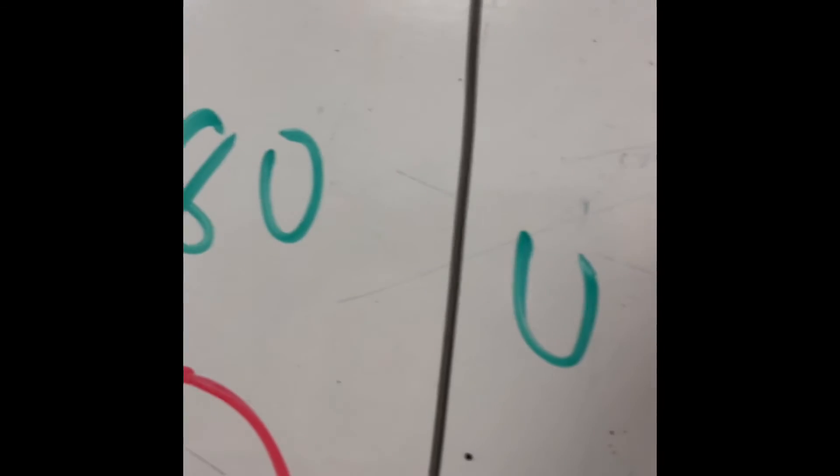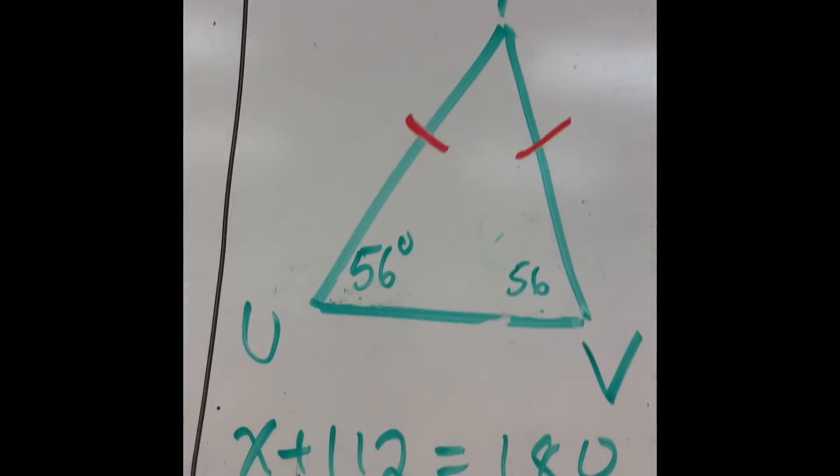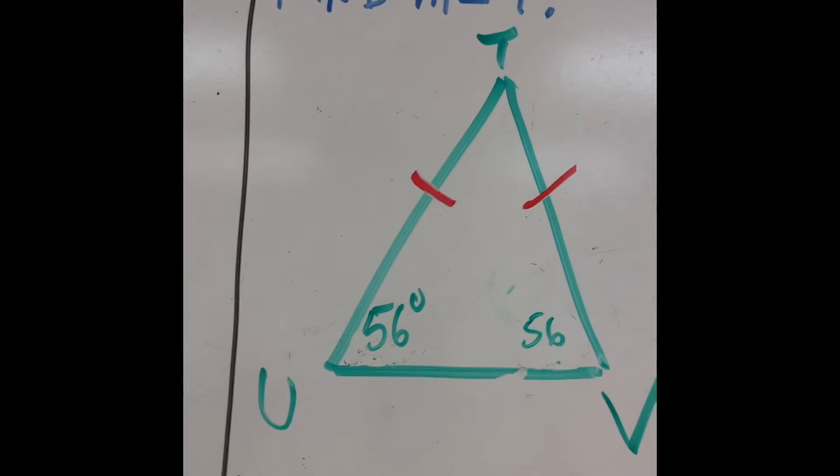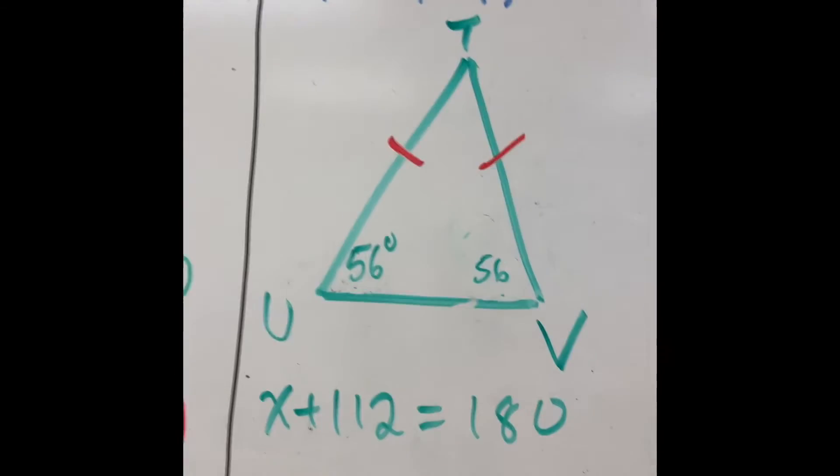It says angle V equals 56. Sorry, this is going to be 56 also. Okay, so that's V is 56. U is 56. What's angle T? Well, 56 plus 56 is 112. Subtract from 180, you get 68. Boom, done.